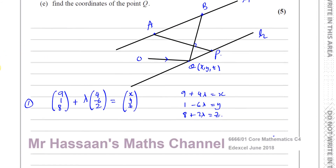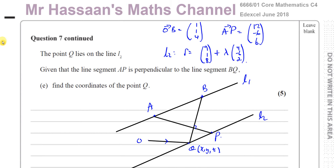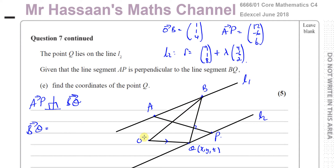That's not enough information yet to find the answer — I need something else. The other condition is that BQ is perpendicular to AP. I know the vector AP already. I need to find vector BQ. The vector BQ equals OQ minus OB — going from B to O (opposite of OB), then O to Q. Since OB has position vector (1, 1, 4), the vector BQ equals (X-1, Y-1, Z-4).